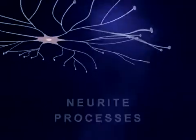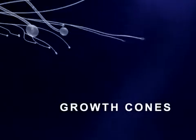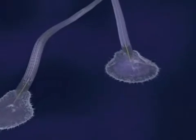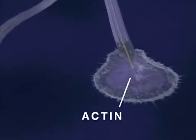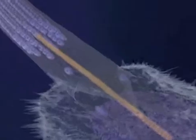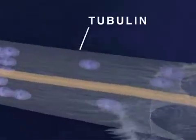At the end of each neurite is a growth cone where structural proteins are assembled to form the cell membrane. Two principal proteins involved in growth cone function are actin, which is responsible for the pulsating motion seen here, and tubulin, a major structural component of the neurite membrane.